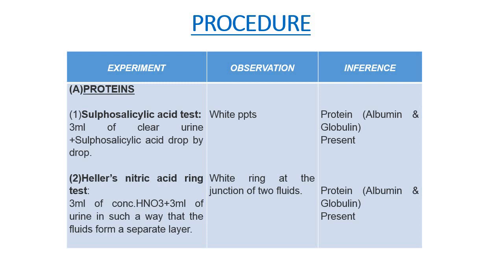Coming to the procedure, first we will see the procedure for proteins. We can perform two tests: the sulfosalicylic acid test and Heller's nitric acid ring test. For the sulfosalicylic acid test, we take 3 ml of clear urine sample and add sulfosalicylic acid drop by drop. The presence of a white precipitate shows the presence of proteins like albumin and globulin in the urine sample.